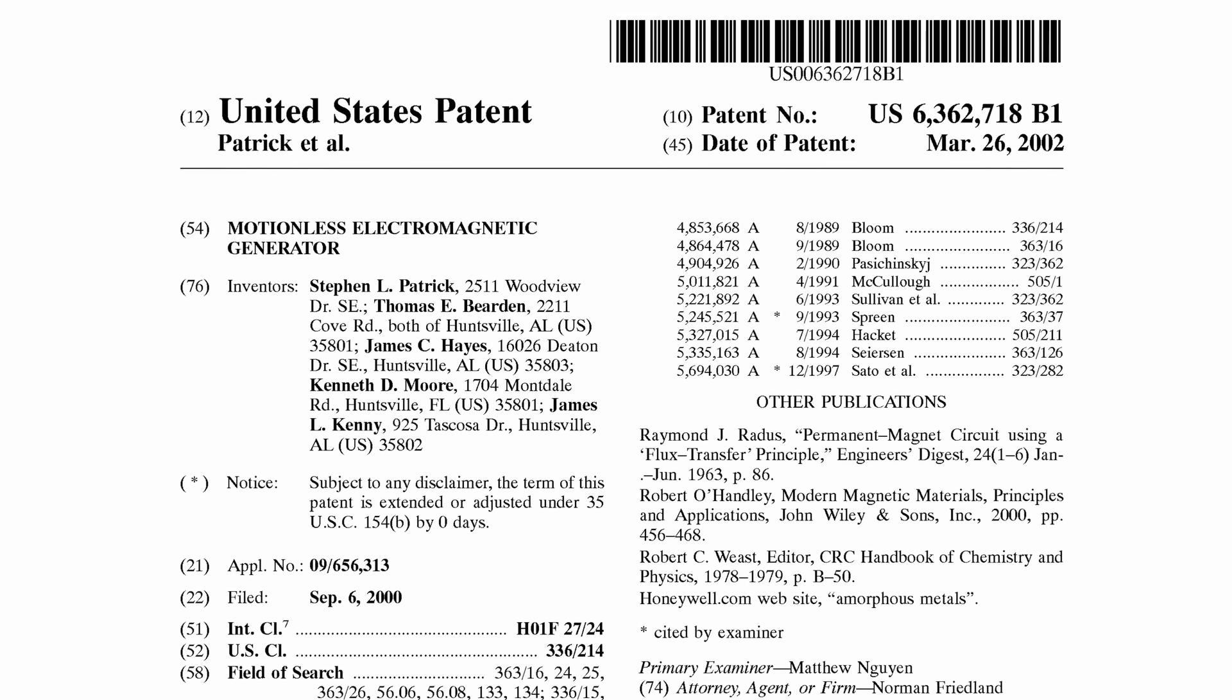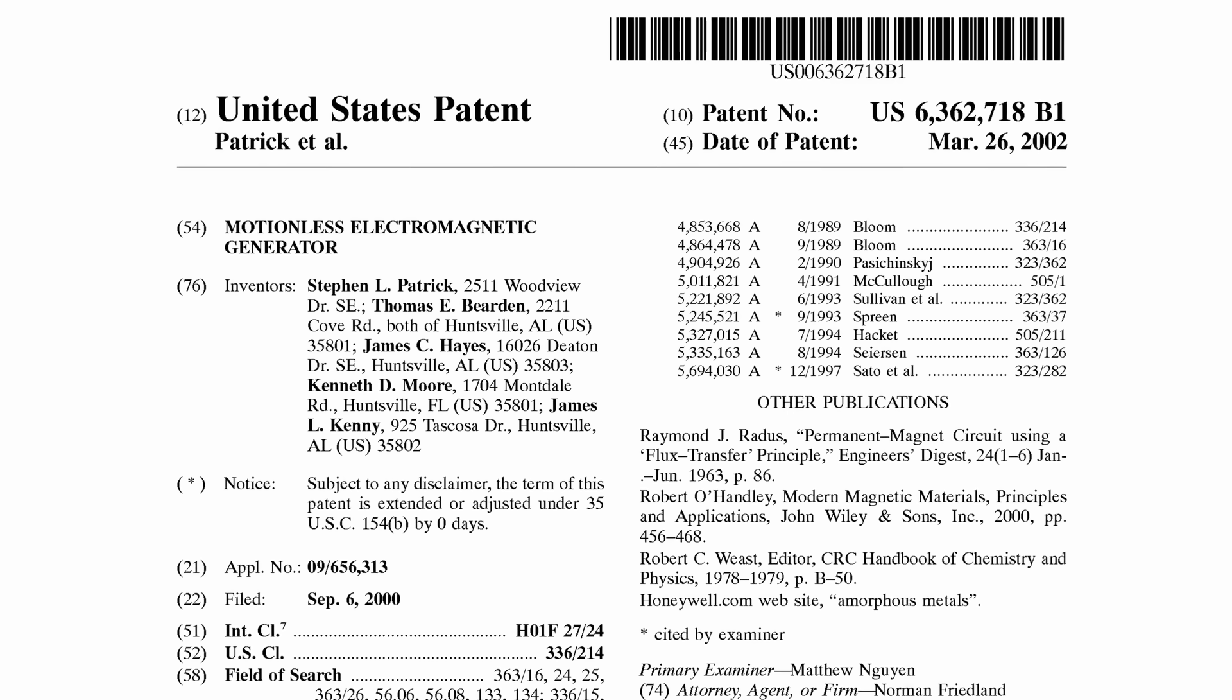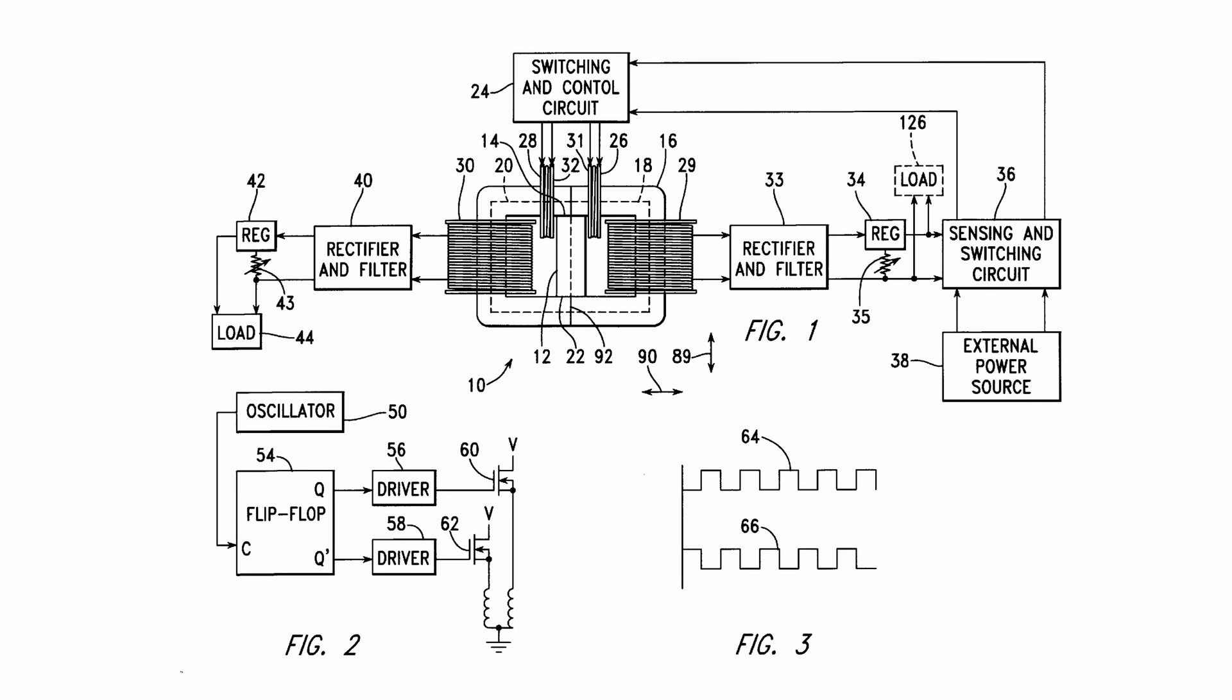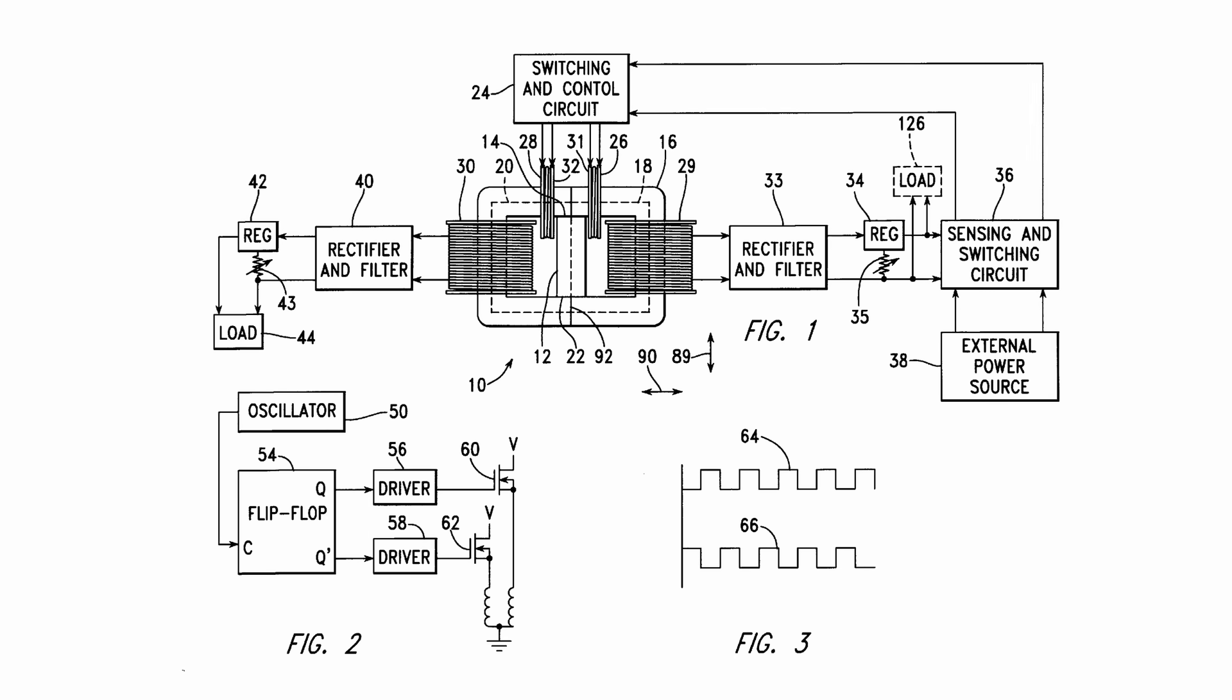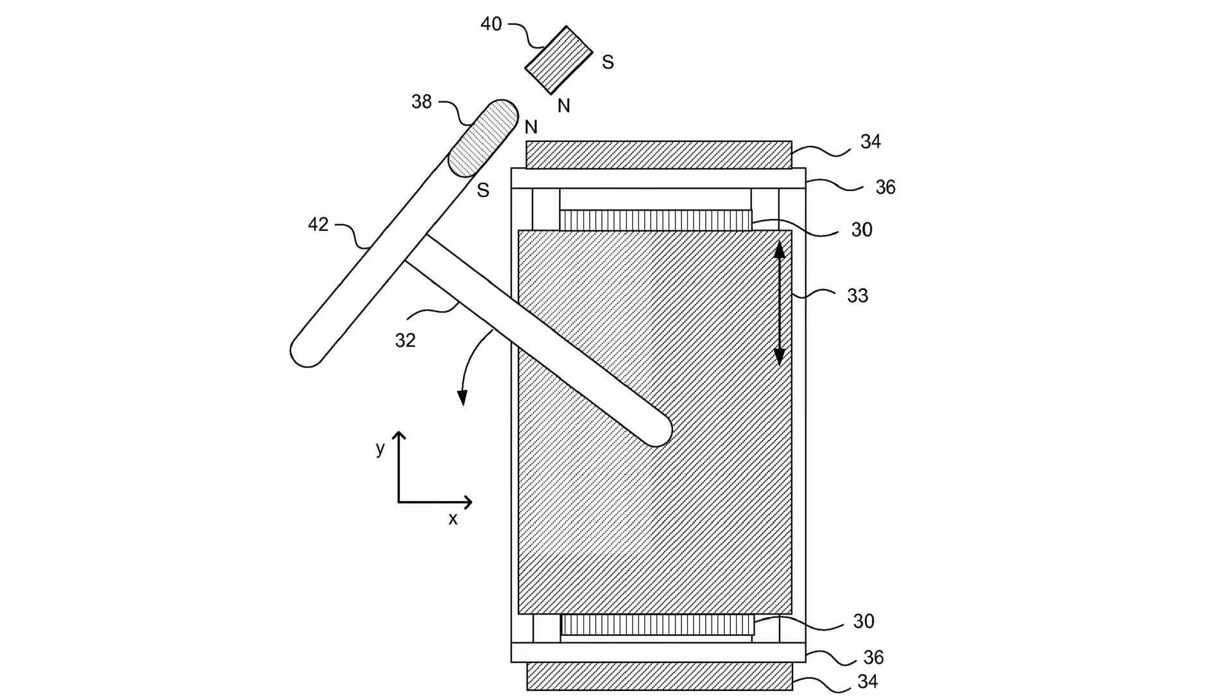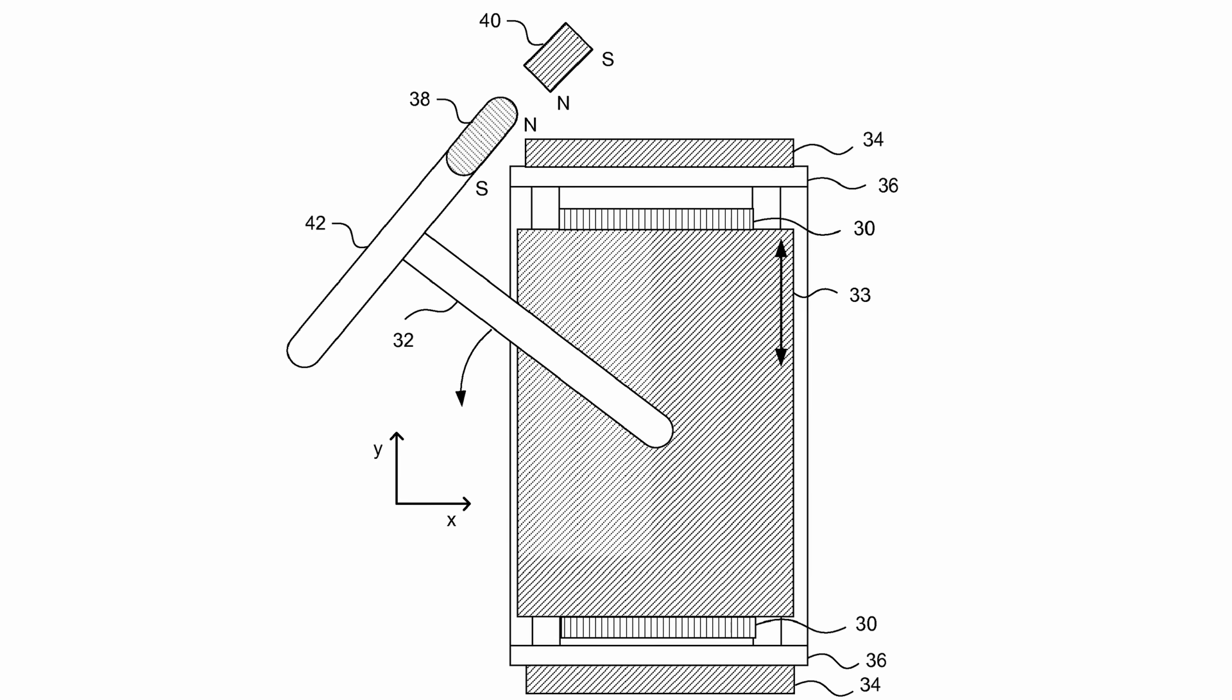There are a bunch of similar patents, like this one from Thomas Bearden in 2002, that again uses a lot of coils and magnets to allegedly trap vacuum energy. Or this one from Richard Lighthouse, who wants to extract angular momentum from the vacuum and then generate energy from that. Problem is, the vacuum has no angular momentum.